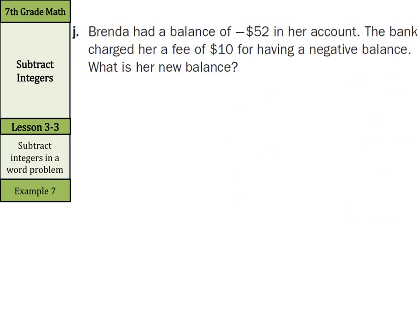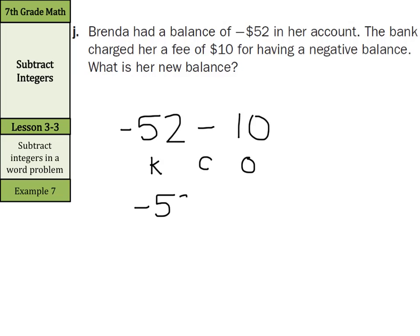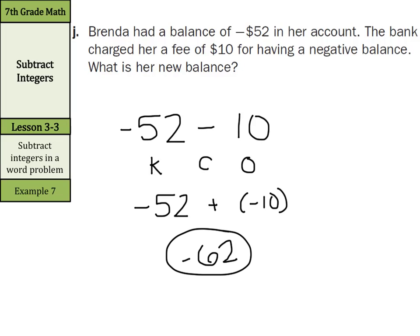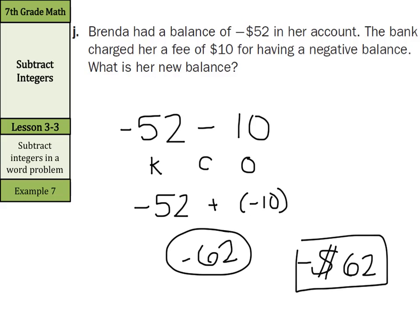In our last example, we have a real-world problem. Brenda had a balance of negative 52 in her account. The bank charged her a fee of $10 for having a negative balance. We started at negative 52, subtract 10, and keep change opposite gives us negative 52 plus negative 10. Same signs — both negative — so 52 plus 10 is 62, keep it negative: her new balance is negative $62, which is smaller than negative 52.